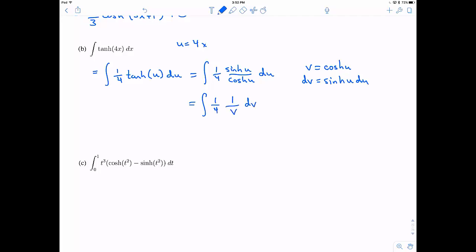So we have 1 fourth. And then my hyperbolic sine of u du becomes my dv. And my hyperbolic cosine becomes v. So now this is going to be 1 fourth. And when I integrate 1 over v, I get the natural log of the absolute value of v.